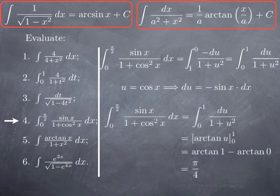The antiderivative of 1 over 1 plus u squared is arctan u, so we evaluate arctan u between 0 and 1. We obtain arctan 1 minus arctan 0, which is pi over 4 minus 0, so just pi over 4.